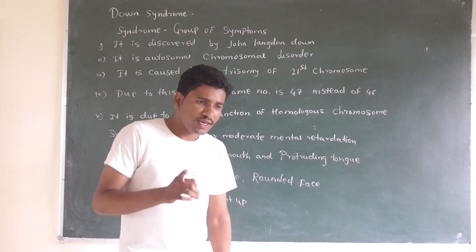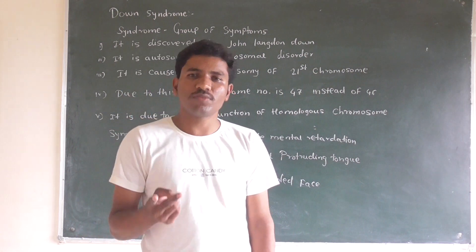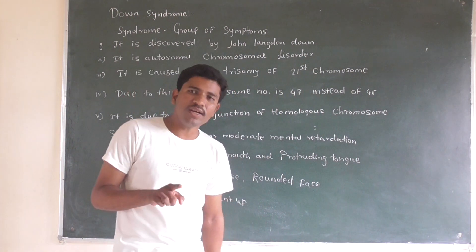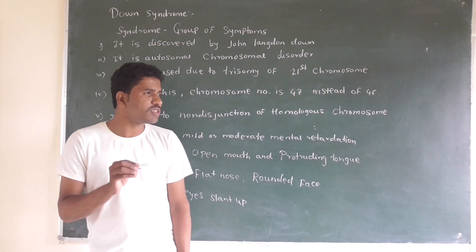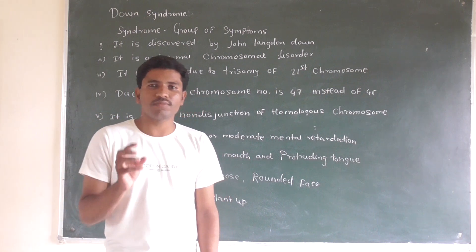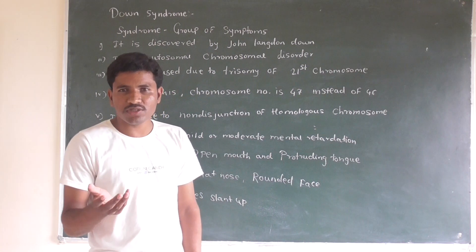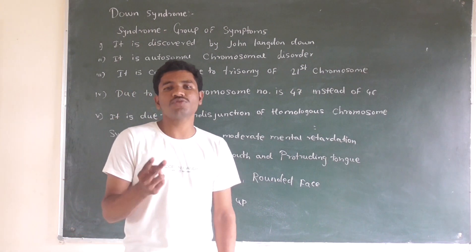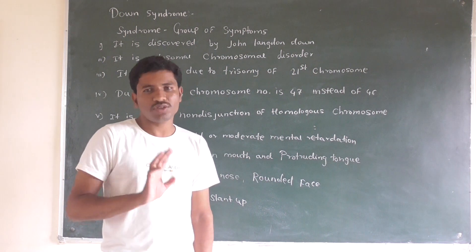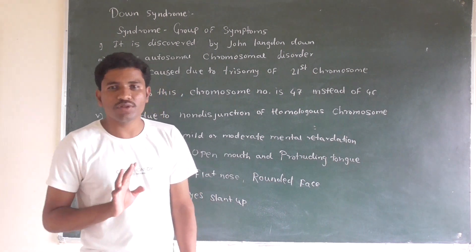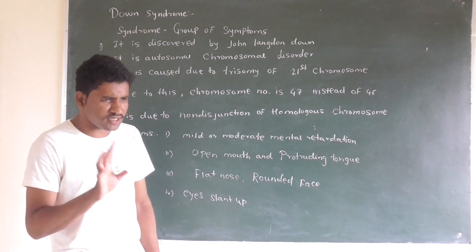Genetic disorders are of two types: Mendelian disorders and chromosomal disorders. Mendelian disorders are basically caused by mutations and chromosomal aberrations. These are the causes of Mendelian diseases.